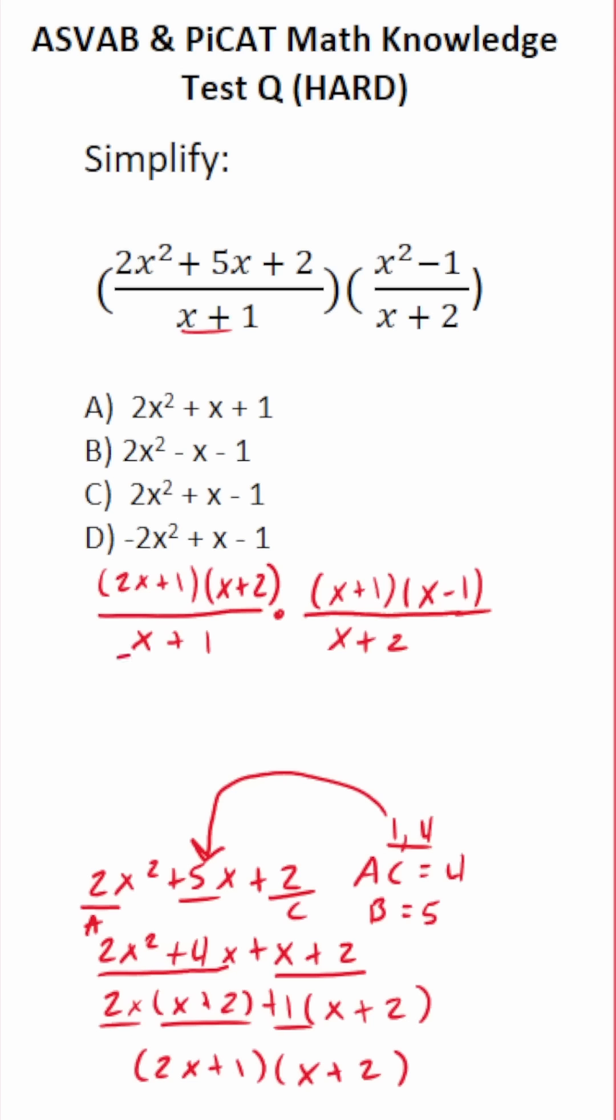So now we can cross-reduce. We have an x plus 1 here and an x plus 1 here. So we're going to leave a 1 down here to represent that this is divided by 1. Then we have an x plus 2 here and an x plus 2 here. Again, if it's helpful, put that 1 there. 2x plus 1 divided by 1 is just 2x plus 1. This is times x minus 1 over 1, which is just x minus 1. So this is our solution.